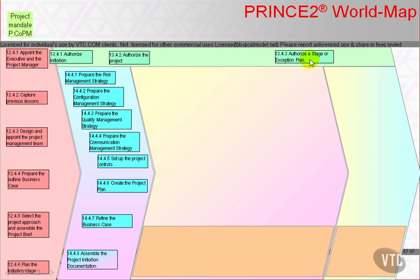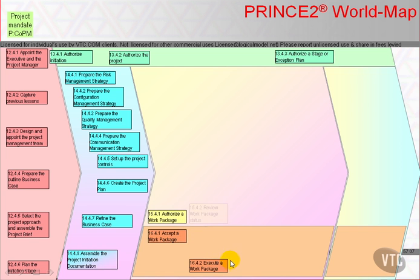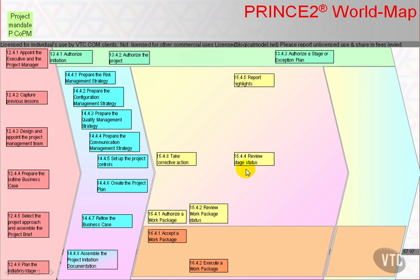Hopefully in initiation there's no exception plan. If the answer is yes, then we authorise a work package and the team manager accepts a work package, executes a work package, and sends checkpoint reports to the project manager to review work package status and consolidate those into review stage status.